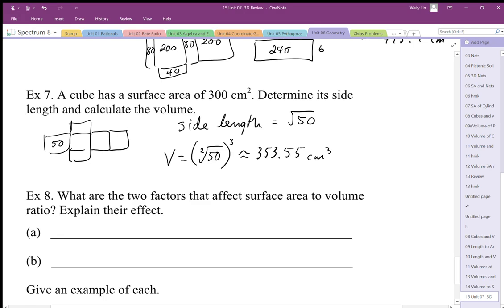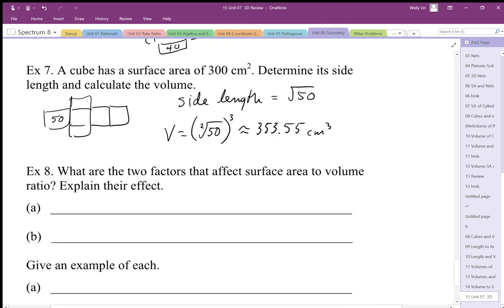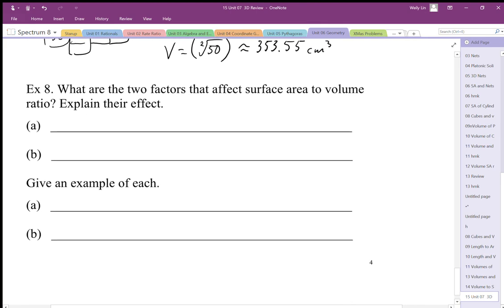Okay, so this surface area gives us this particular volume. So last thing is talking about surface area to volume ratio and explain their effects. So there's two things that affect the surface area to volume ratio.